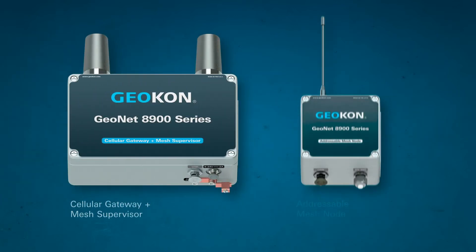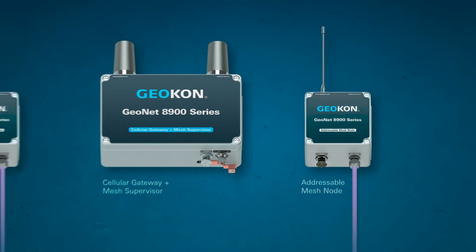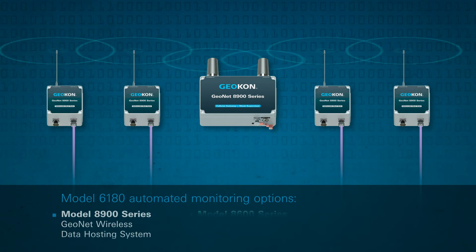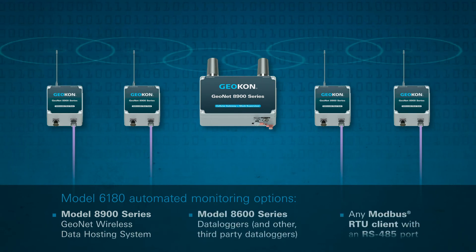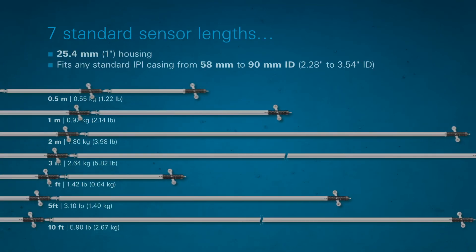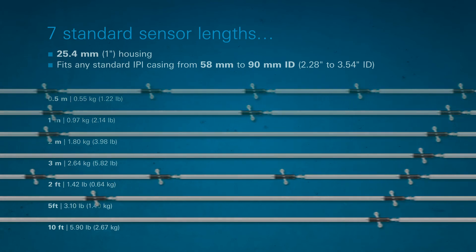Automated monitoring is possible using the GECON Model 8900 GeoNet Wireless Data Hosting System or any other device capable of being a Modbus RTU client and having an RS-485 port. The overall weight reduction and ease of assembly reduces costs and provides considerable savings of time and labor.